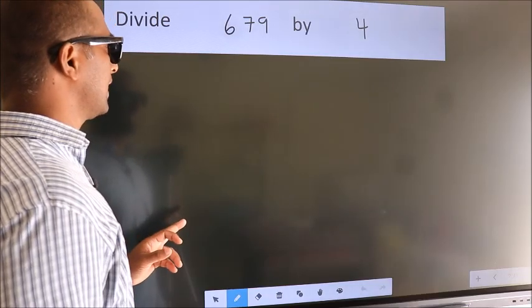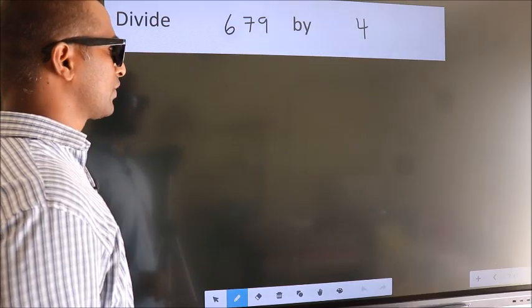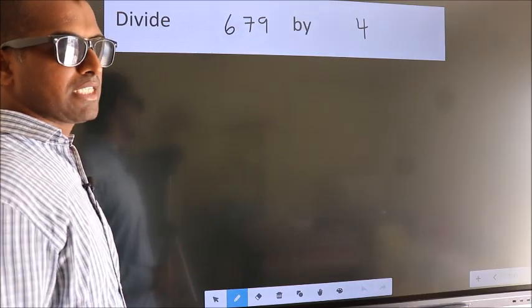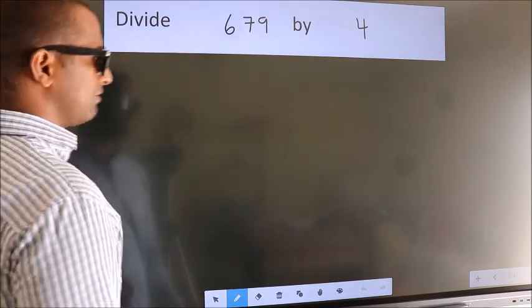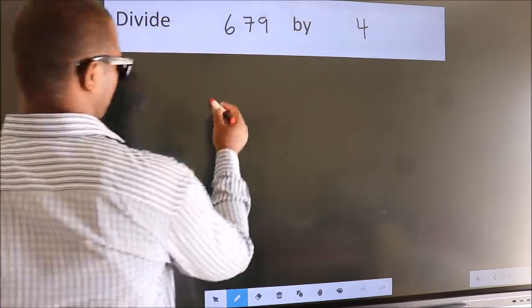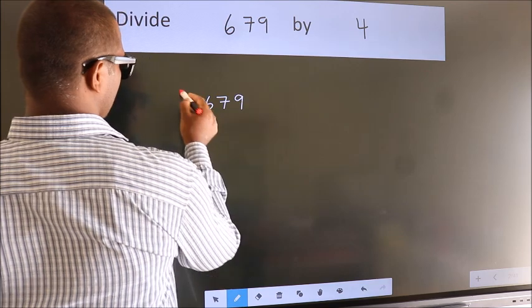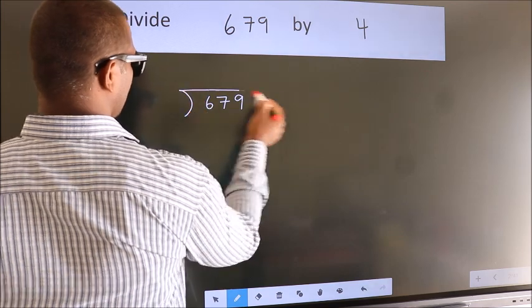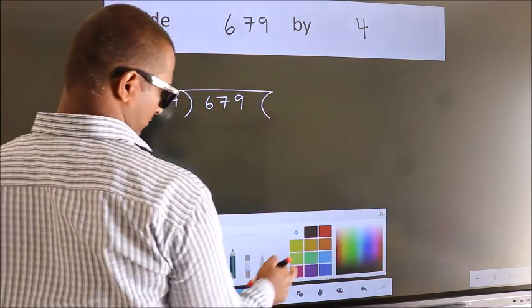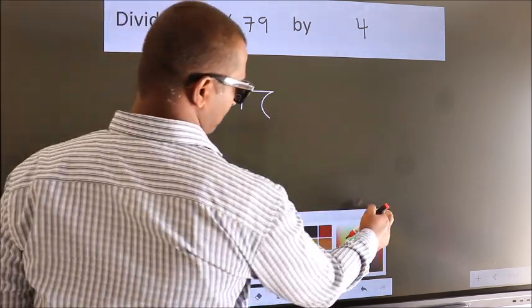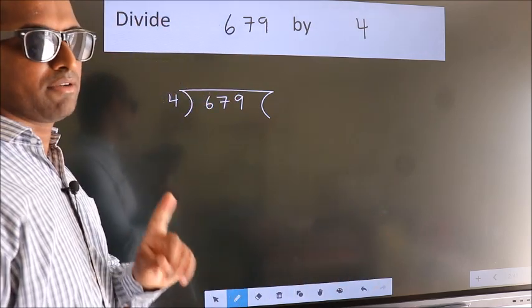Divide 679 by 4. To do this division, we should frame it in this way: 679 here, 4 here. This is your step 1.